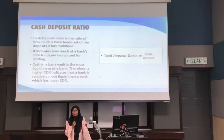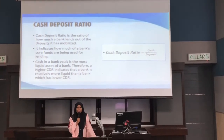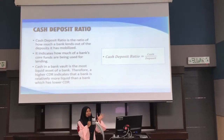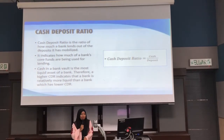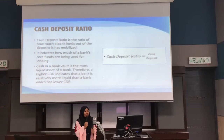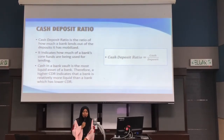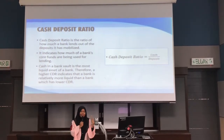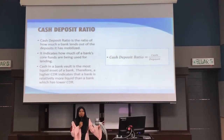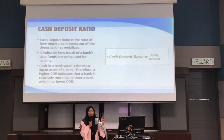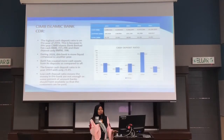Assalamualaikum warahmatullahi wabarakatuh. My name is Masnya Binti Abdul Kalim. I will present about the cash deposit ratio. The cash deposit ratio is a ratio of how much a bank lends out of their mobilized deposits, indicating how much of a bank's funds are being used for lending. Cash in a bank vault is the most liquid asset for a bank, so a higher CDR indicates that a bank is relatively more liquid. The formula for cash deposit ratio is cash divided by deposit.